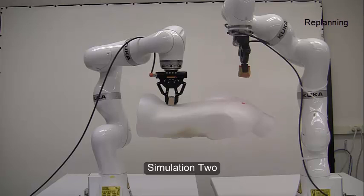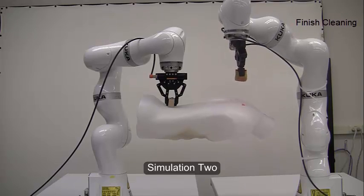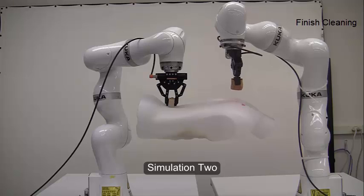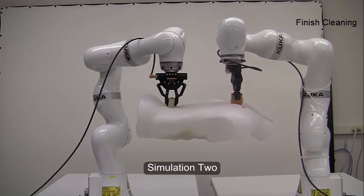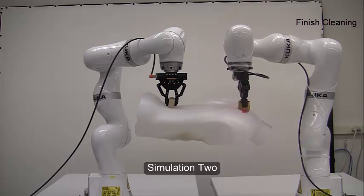Using the second KUKA, which is holding the mannequin, we simulate an unexpected motion. The cleaning KUKA stops its motion when the force threshold is triggered and returns to a safety position. It then replans and continues cleaning.